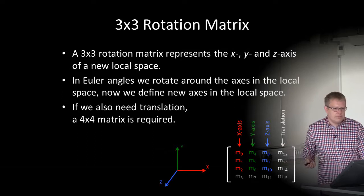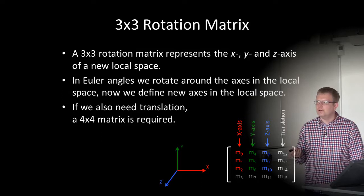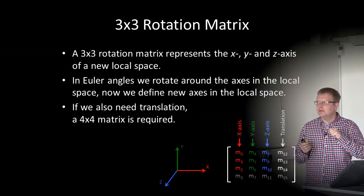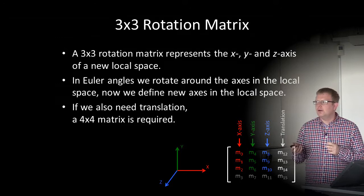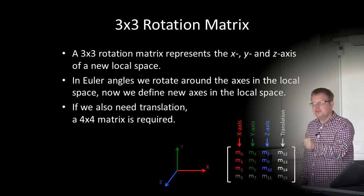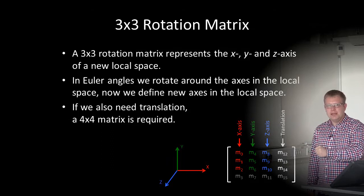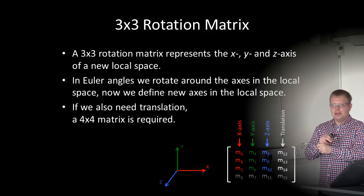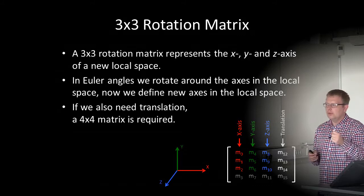The 3×3 rotation matrix represents the X, Y, and Z axes of a new local space. We rotate the whole local space — rotating around the axis in the local space. In Euler angles, we have an angle rotating around the axis. Here, we define new positions of the axes — we don't only define an angle; we define new axes. And it's much simpler to calculate and interpolate between two vectors.